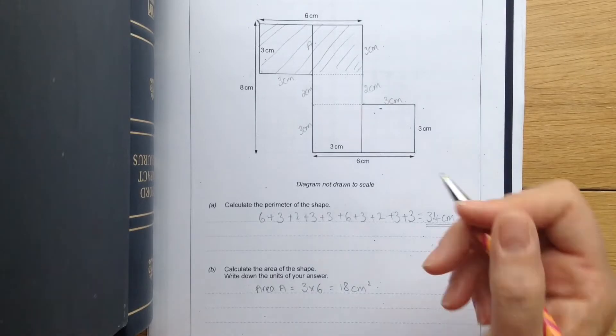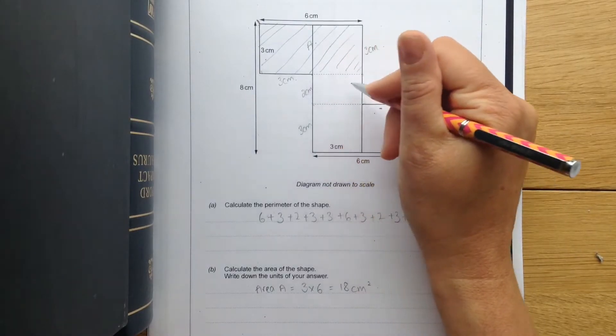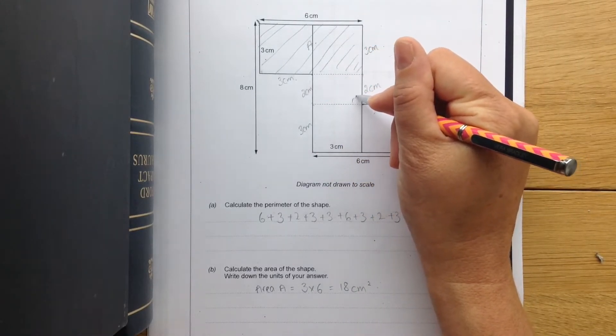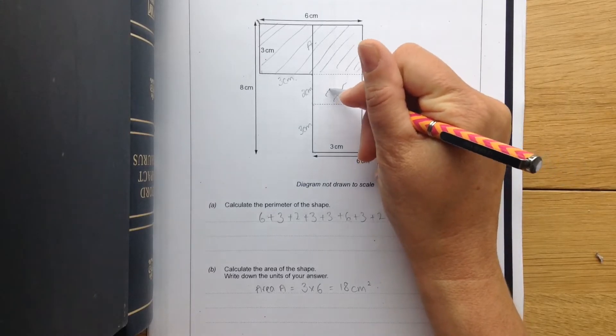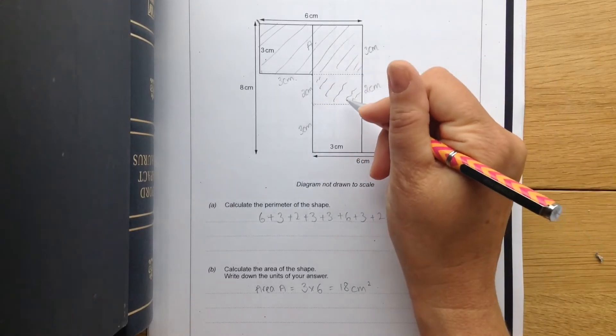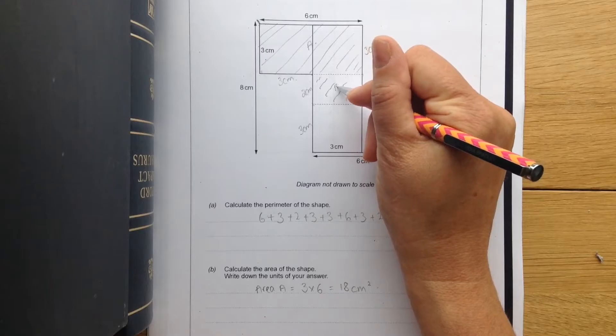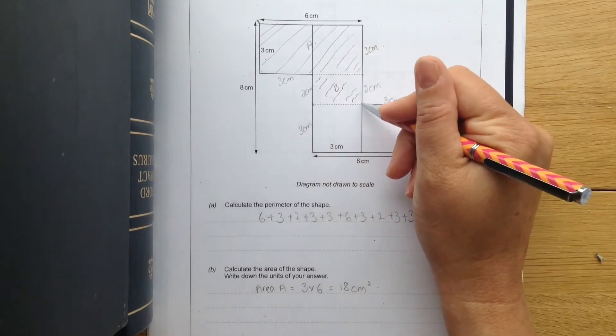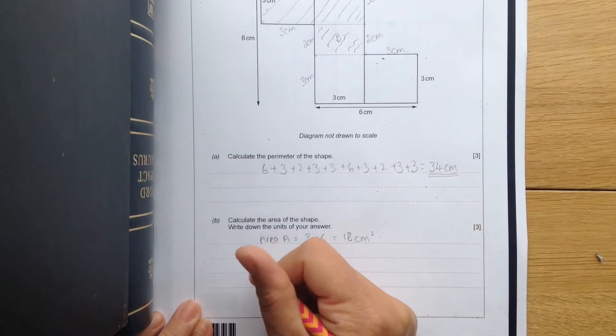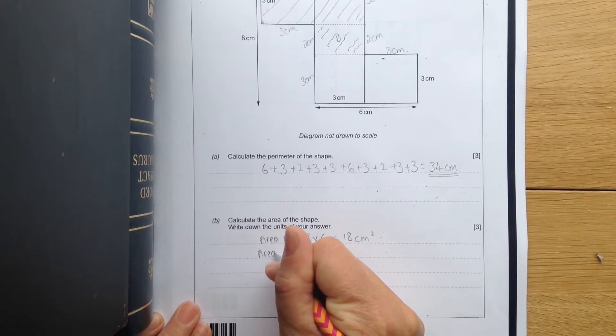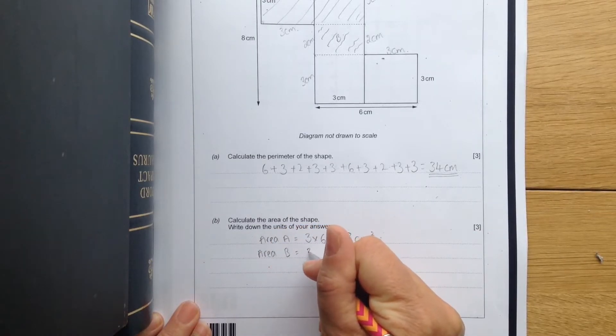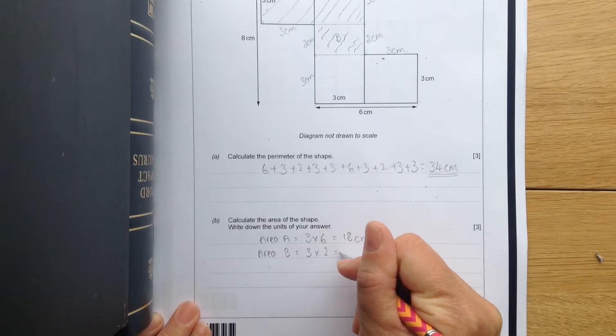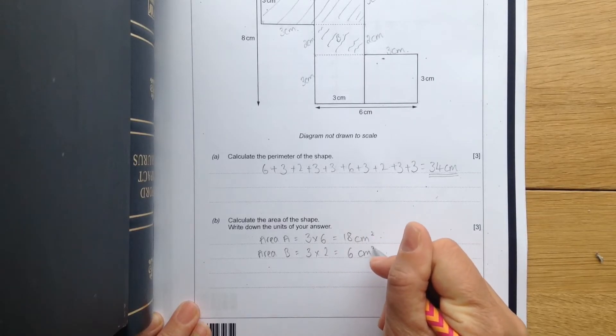The next part then is this piece here. I'm going to shade this in a different way. So I'm going to use squiggles here. And this part is going to be area B, and it's going to be 2 by 3. So area B equals 3 times 2, 6 centimeters squared.